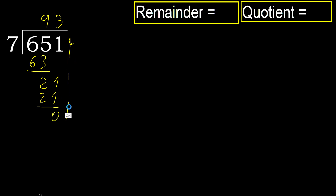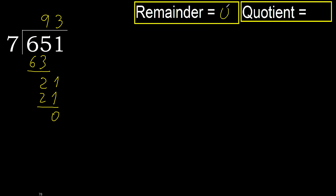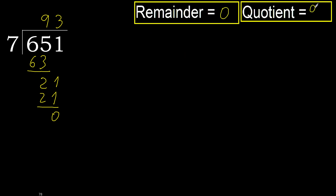There is no next number, therefore we finish. 651 divided by 7 is 93.